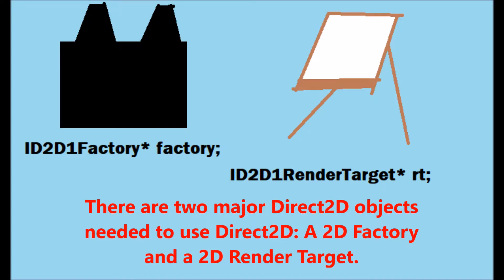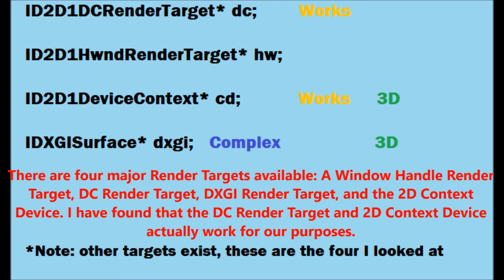There are two major Direct2D objects needed to use Direct2D: a 2D factory and a 2D render target. There are four major render targets available: a window handle render target, a DC render target, a DXGI render target, and the 2D context device.